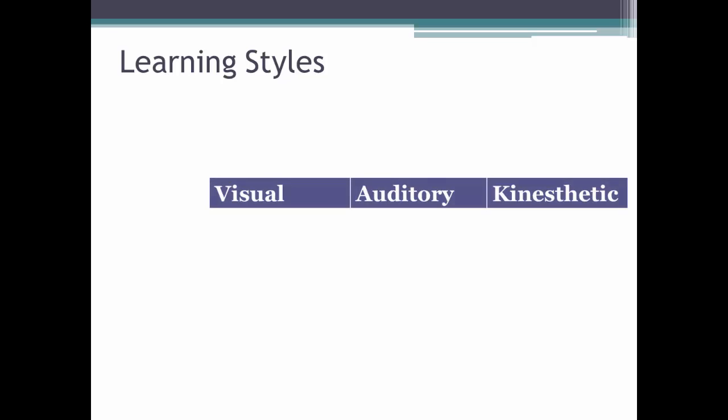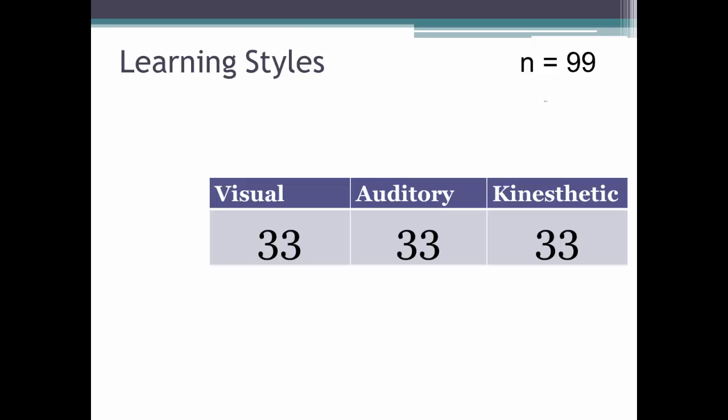Let's start with some assumptions. Let's say that we're interested in learning styles. In particular, we hypothesize that individuals have dominant learning styles — one of three: visual, auditory, or kinesthetic. You could write a measure to divide individuals into one of the three learning styles, and you do a survey of 99 people. If the resulting data is evenly distributed, we would expect the numbers to be broken up evenly among the three learning styles — in this case, 33 in each category. 99 divided by three categories is 33.